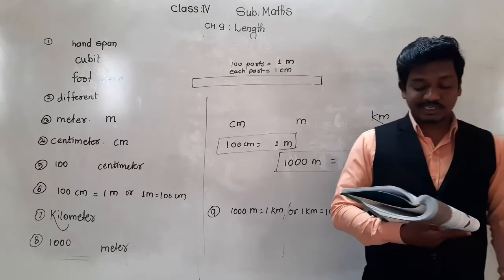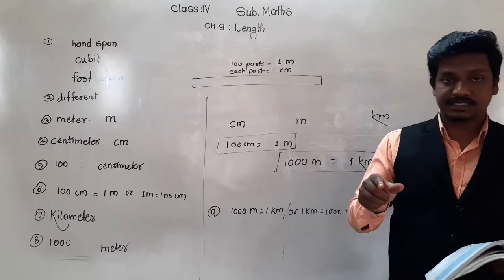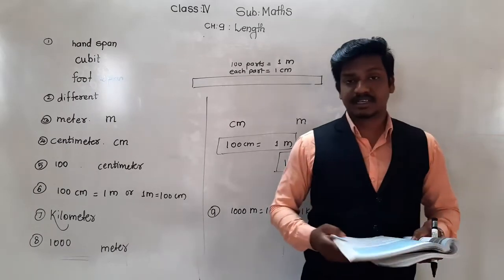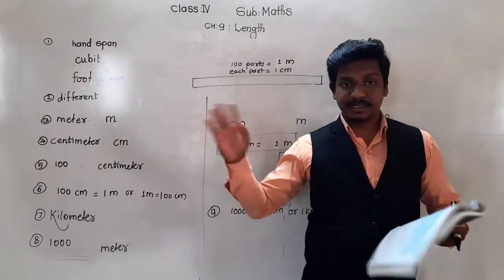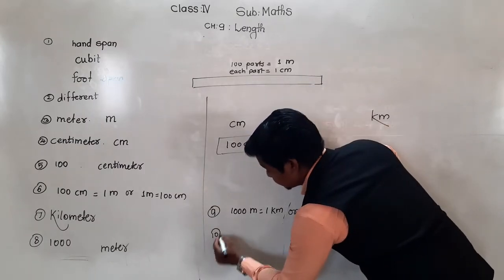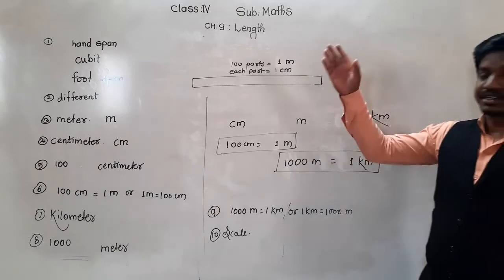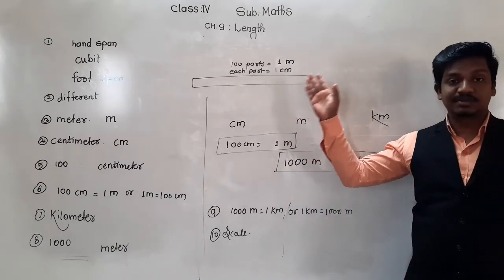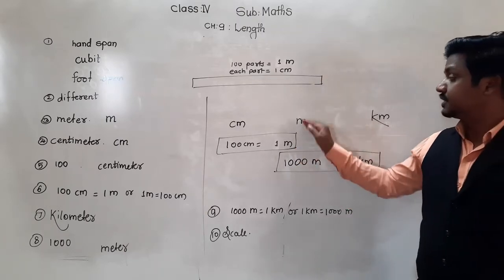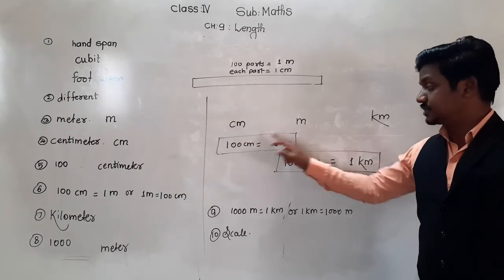To measure small lengths, we use a scale. So, to summarize today's revision: the units of length are — meter as the standard unit, centimeter for smaller units, and kilometer for bigger units. 100 centimeters is equal to 1 meter, and 1000 meters is equal to 1 kilometer.